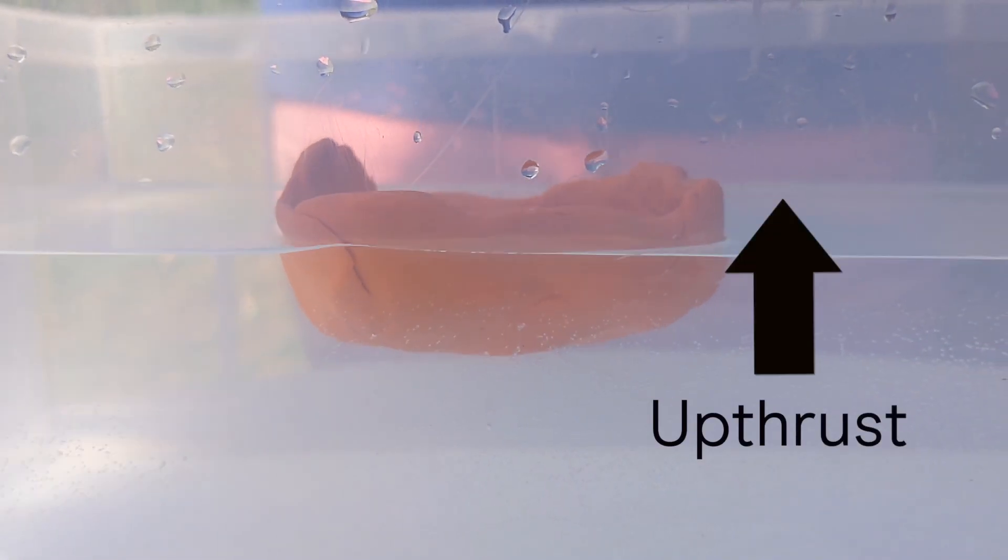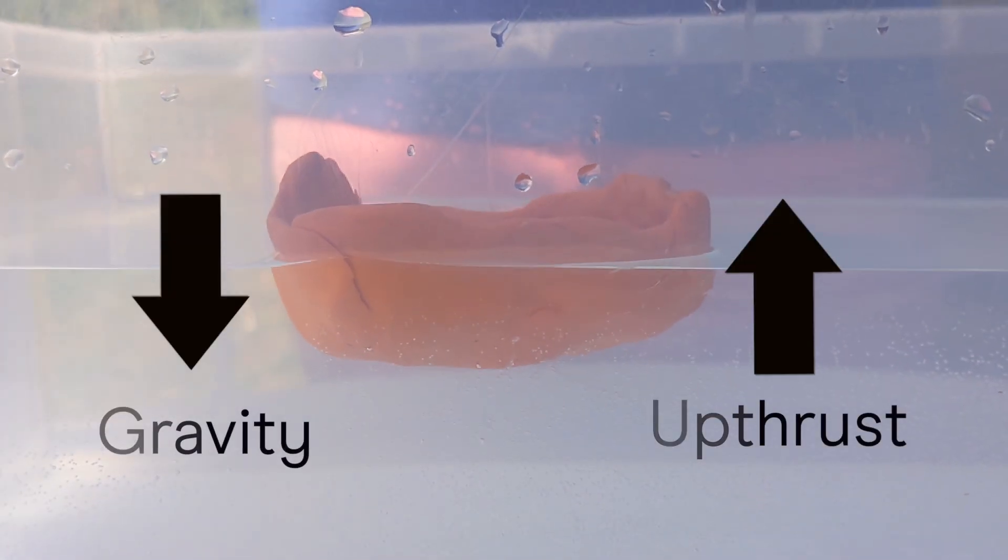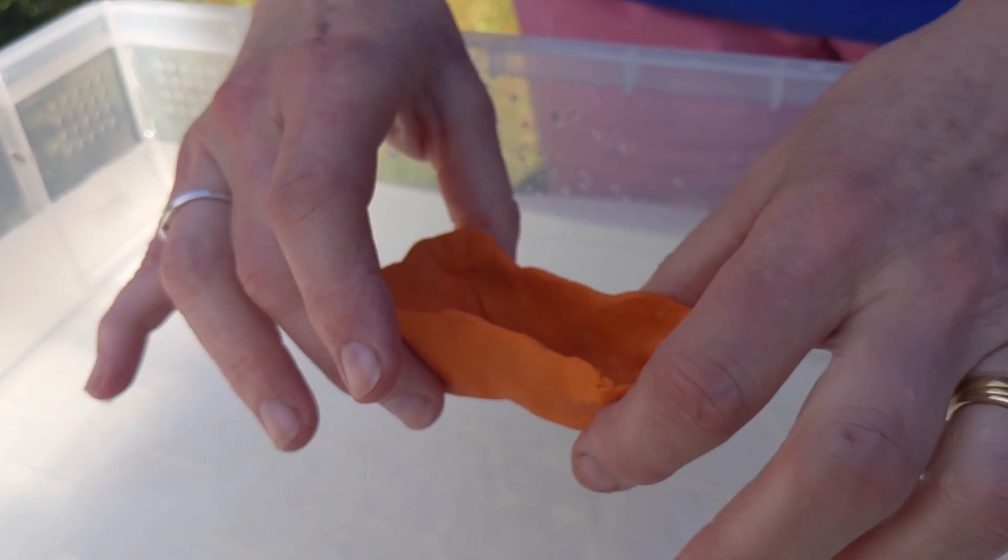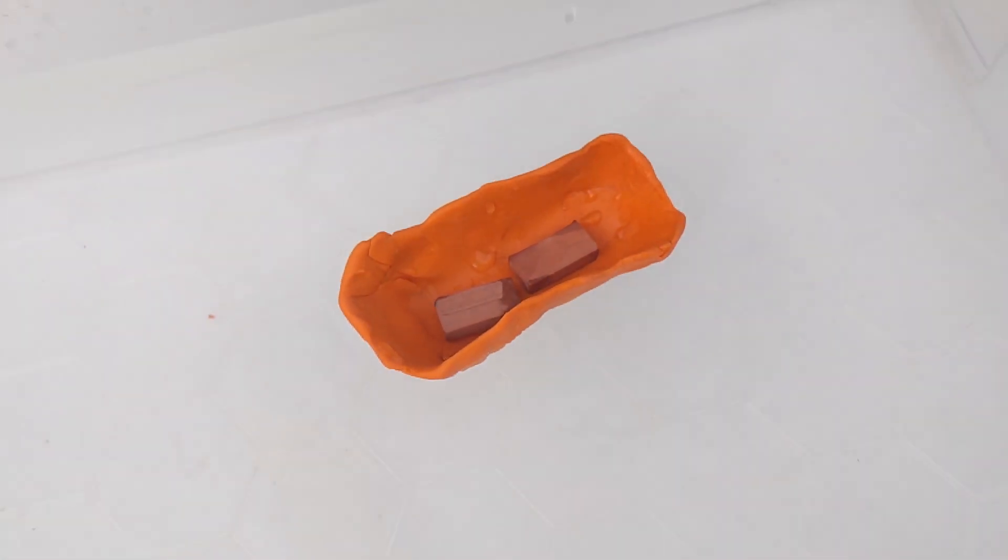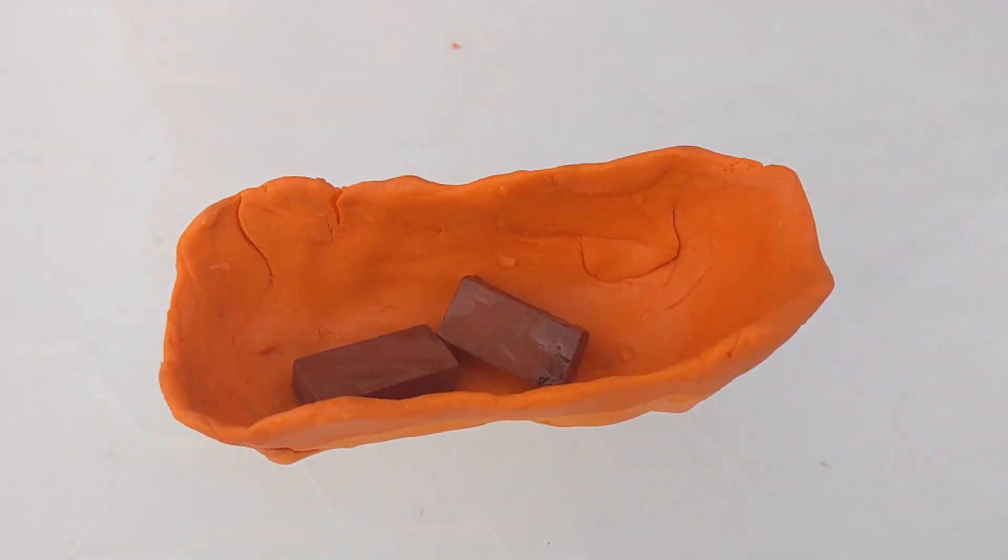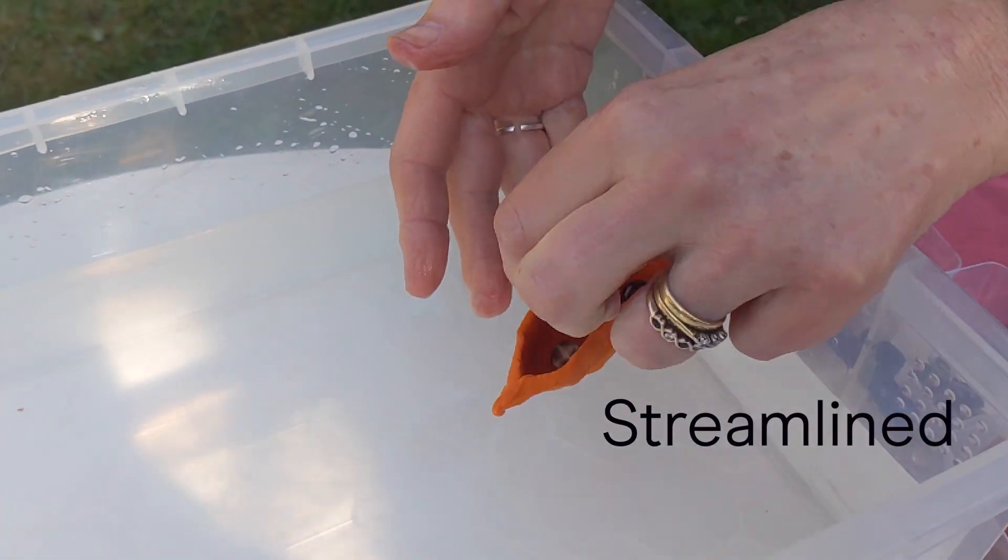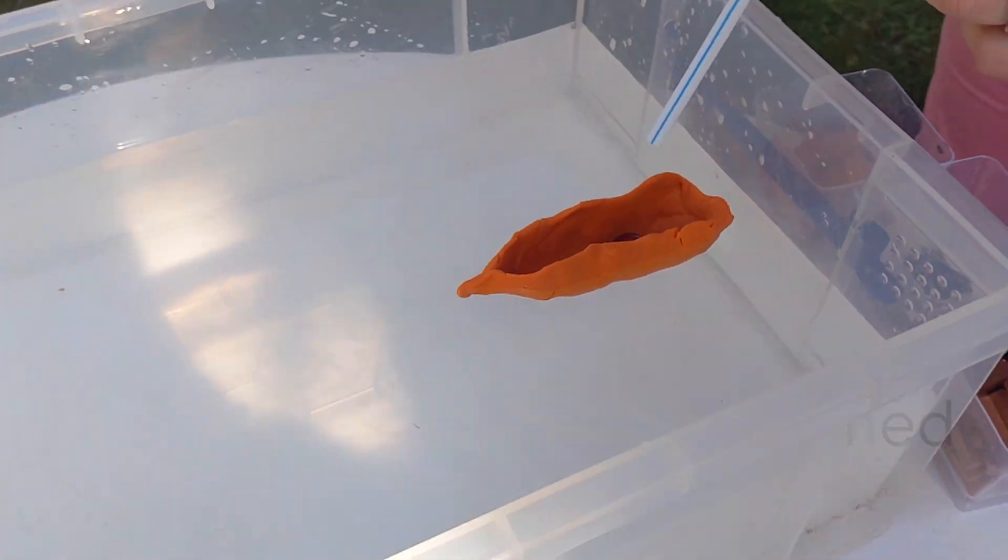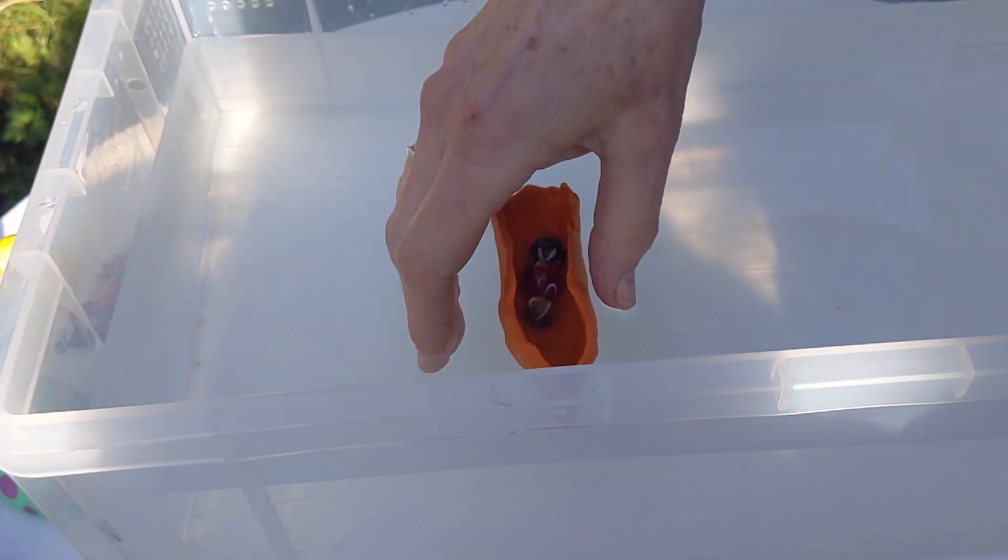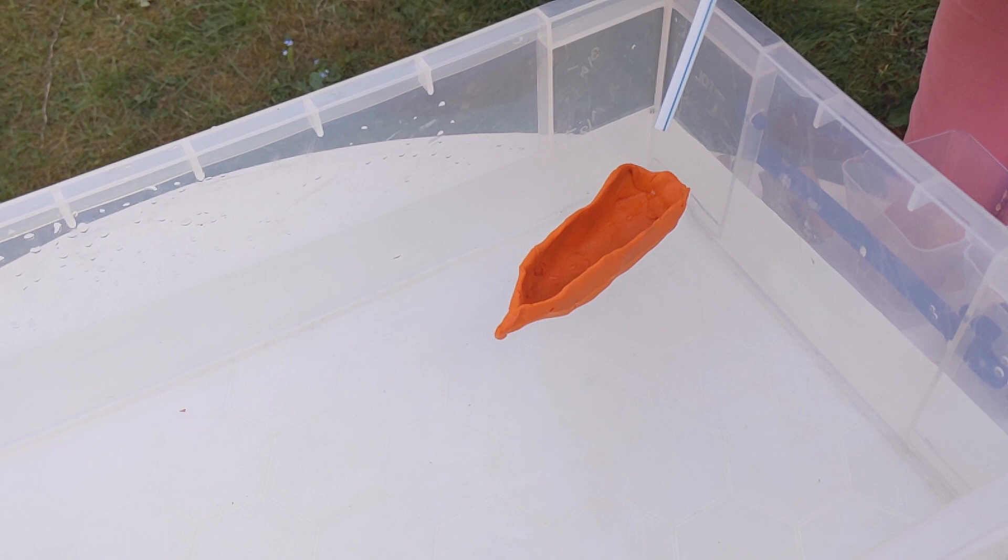We have learned today that boats float with the help of a force called upthrust. When upthrust is equal to gravity, an object will float. We have tested, adapted and retested our boat designs to enable our boats to carry more cargo and to be streamlined. We have learned that for an object to be streamlined, we need to decrease the area that water resistance can push against.